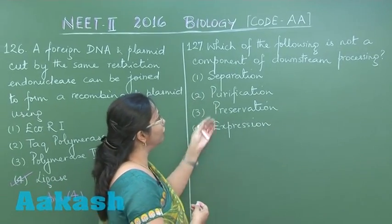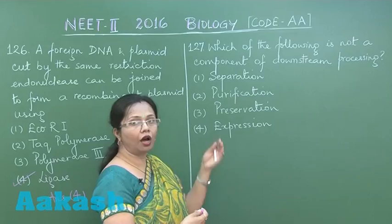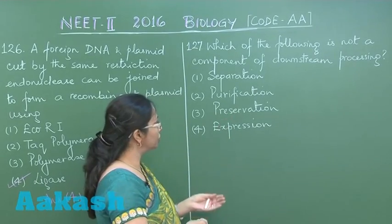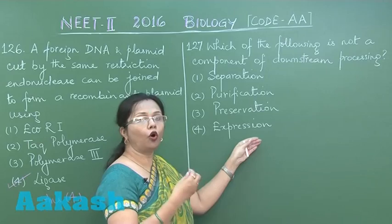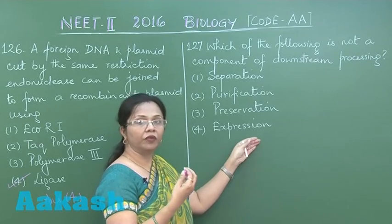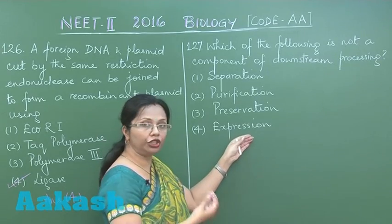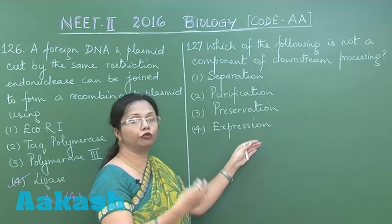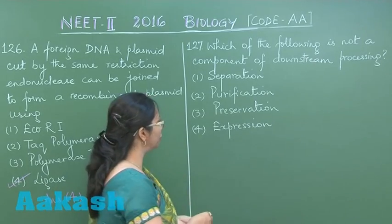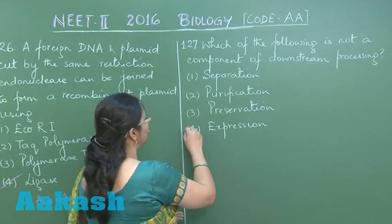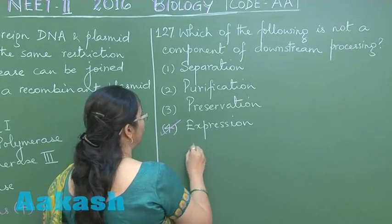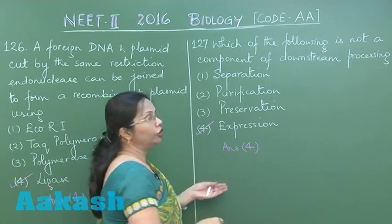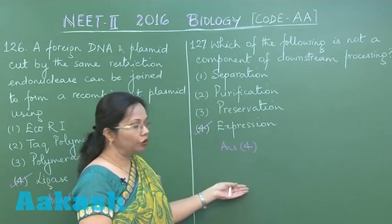Separation, purification, and preservation are all components of downstream processing. However, the expression of a particular gene of interest occurs beforehand, in the upstream processing stage. So the answer is again 4. Now let's move on to question 128.